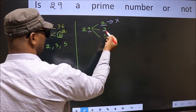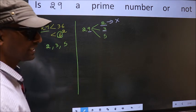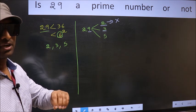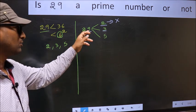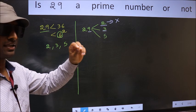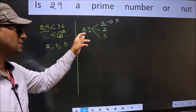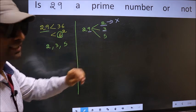Now, for 3. To check divisibility by 3, for that we should add the digits. What I mean is, 2 plus 9, we get 11 and 11 is not divisible by 3. So, this number also not divisible by 3.